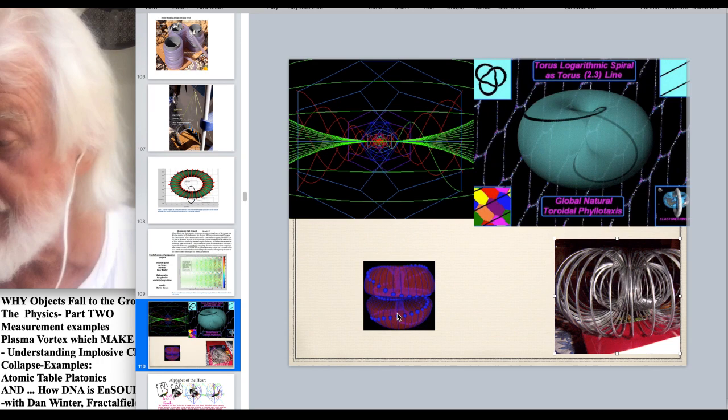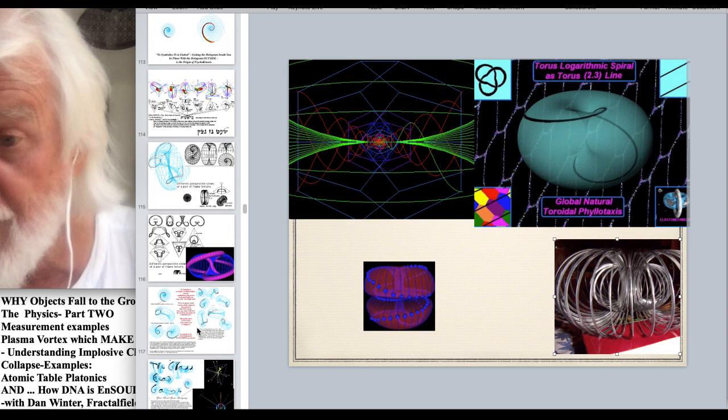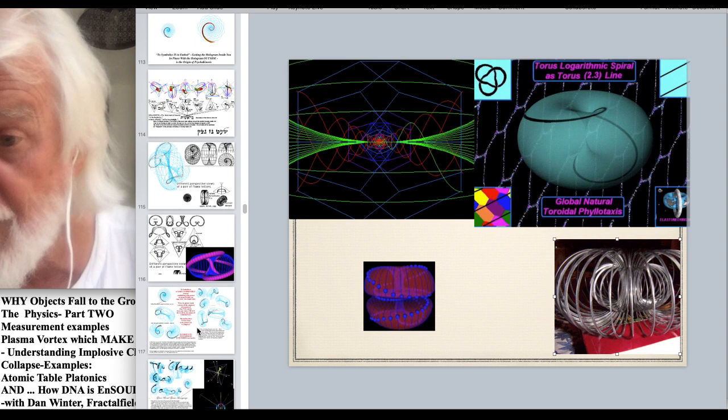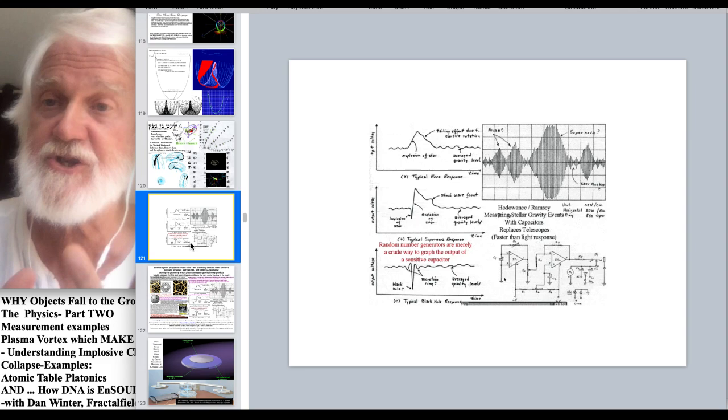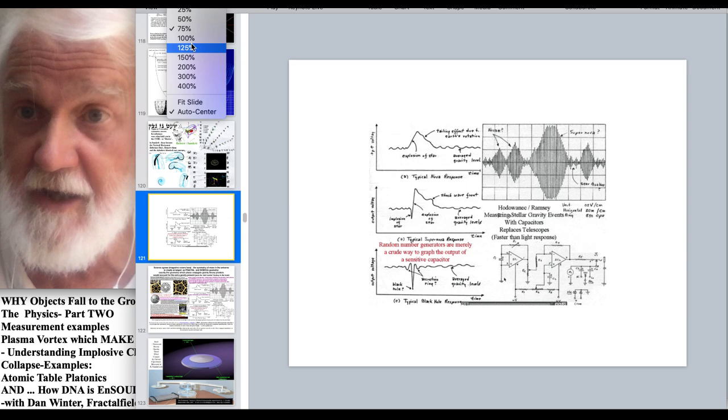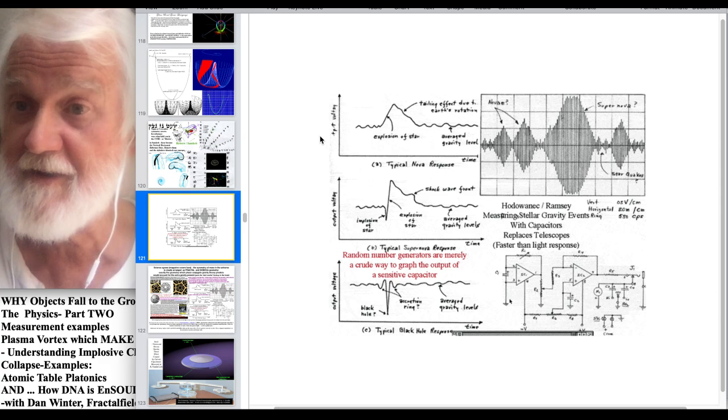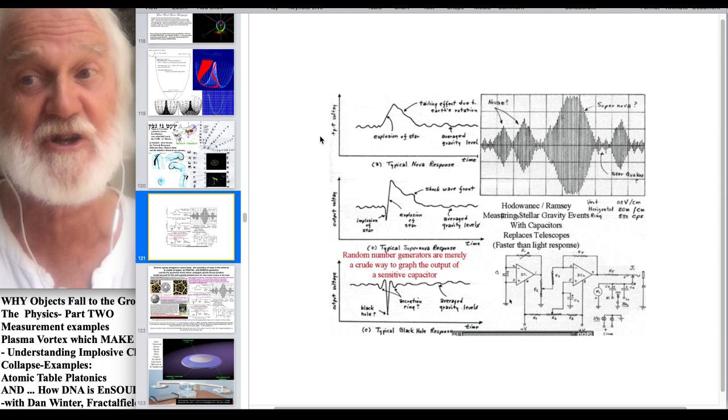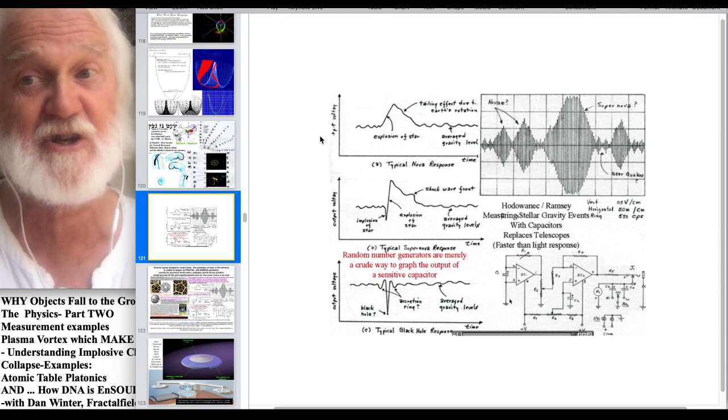All right. Next, we're going to talk about plasma vortex examples. Slide number 121. This is just to describe our friendship with Hodewanik and Ramsey, who made these measurements here, replacing the million dollar Webber gravity wave, replacing the billion dollar LIGO gravity wave detector. We have here a 25 cent capacitor doing a better job of measuring gravity waves. Hello!